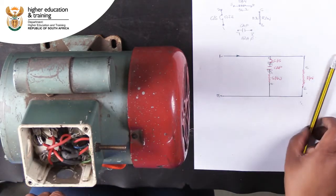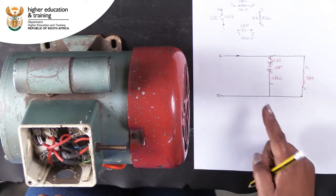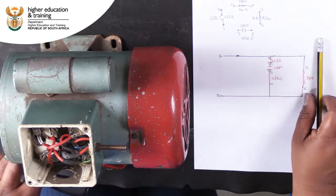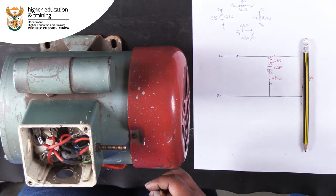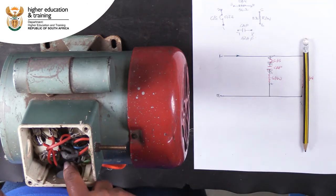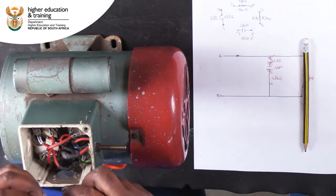We also have to connect points 4 and 6 together so that they can both connect to neutral. We use another bridge to connect points 4 and 6.